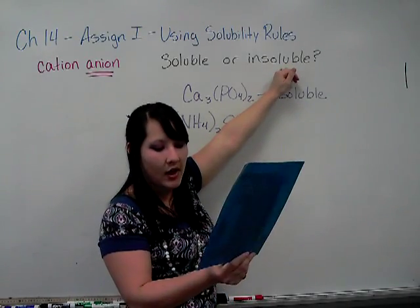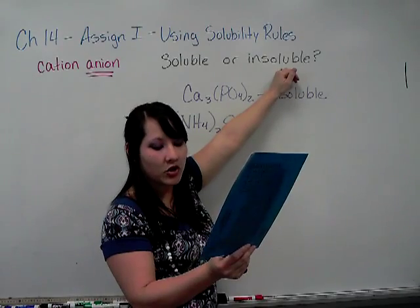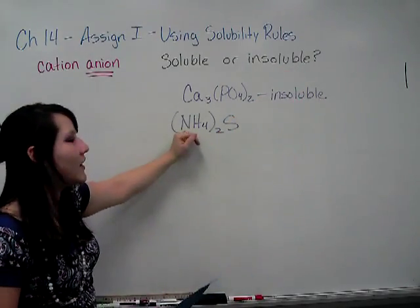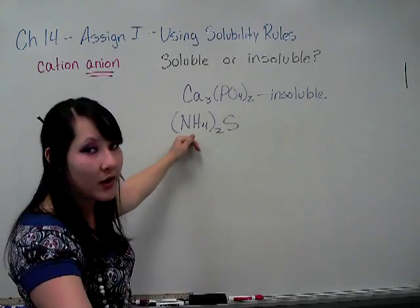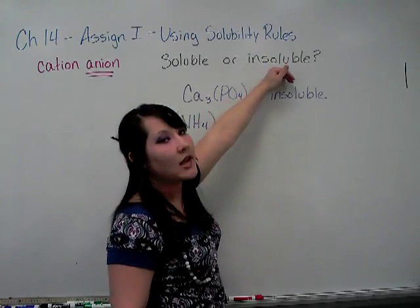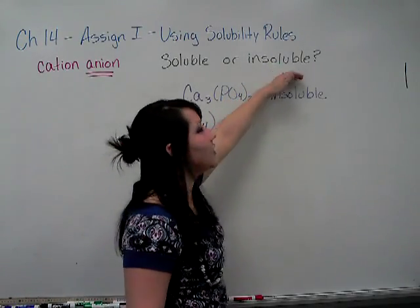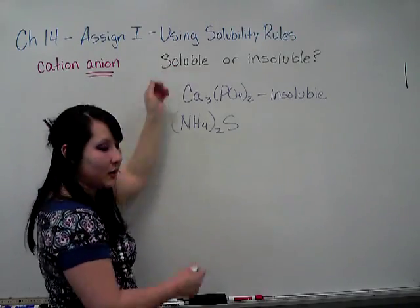Except with group one, two, and ammonium. Because it has a cation of ammonium, that's going to make it an exception. It'll be the opposite. Instead of insoluble, we're going to label it soluble.